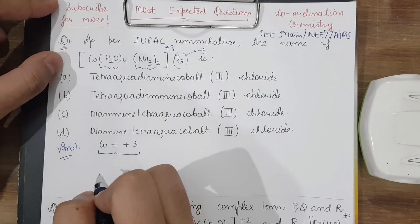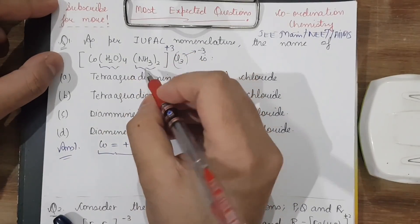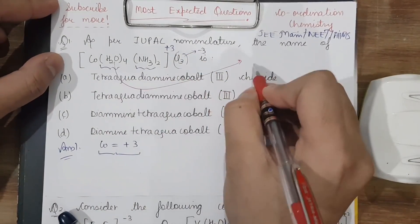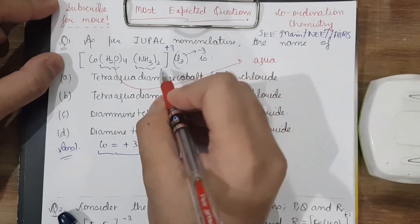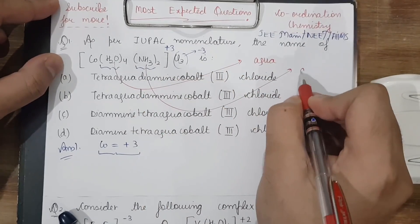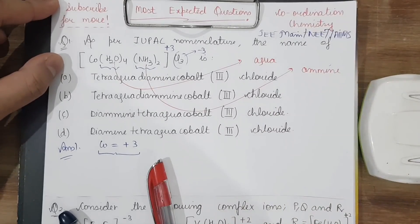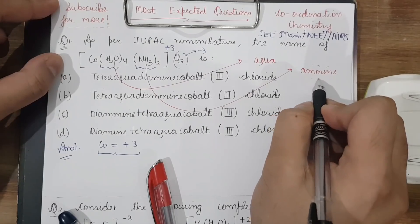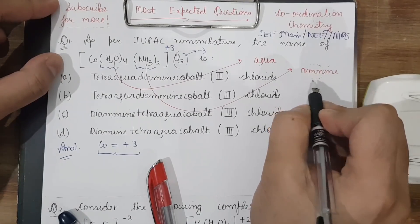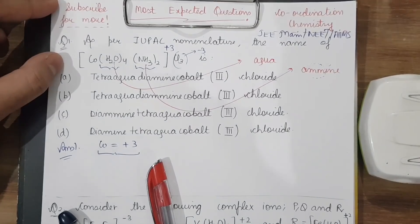H₂O is neutral and NH₃ is also neutral, so Co is in the +3 oxidation state. Our next mission is to decide which groups are present. H₂O is known as 'aqua' and NH₃ is known as 'amine' — spelled with double 'm' (a-m-m-i-n-e). Make sure this is very important — the organic 'amine' also has double m.